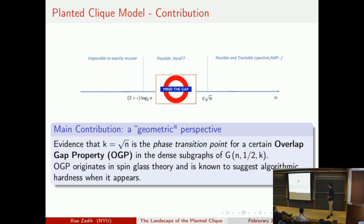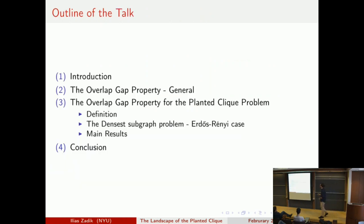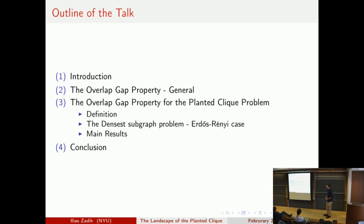The structure of the talk: first I'll introduce the overlap gap property in some generality, including the OGP for recovery problems. Then I'll move to the planted clique model with an exact definition. I'll describe a tool of independent interest from a random graph theory perspective — understanding the densest subgraph problem in the Erdős–Rényi case. Finally, I'll present the evidence for a √n phase transition.